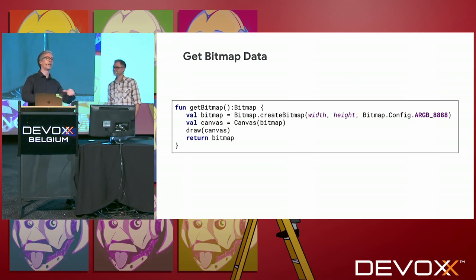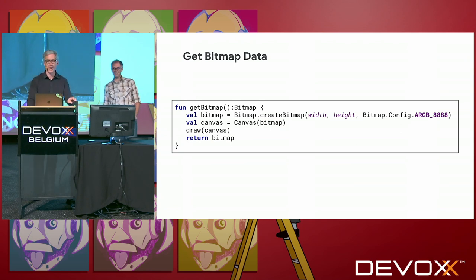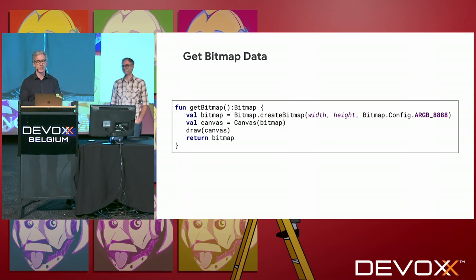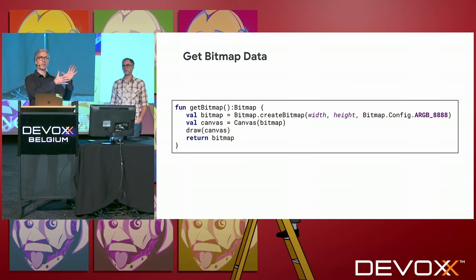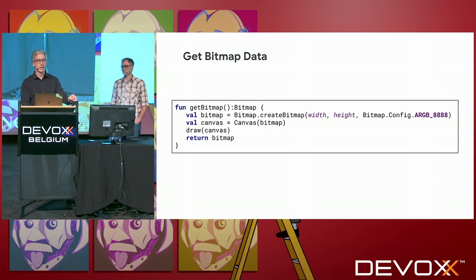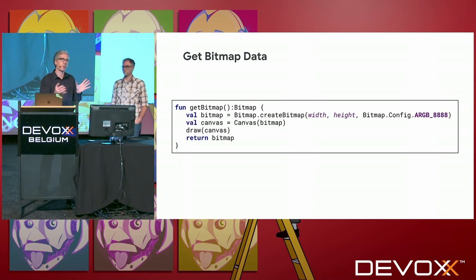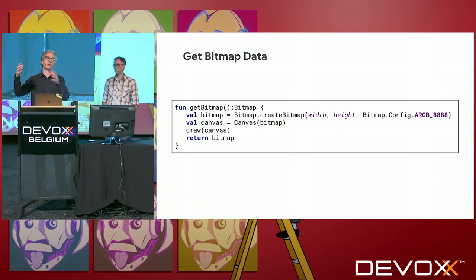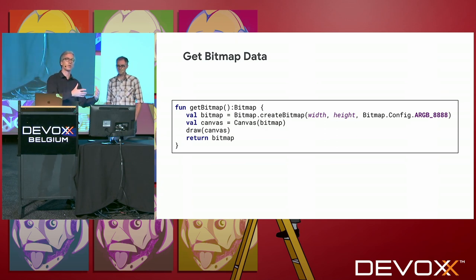Yeah, we go do something else, the UI is responsive, and then eventually we get a callback later. So to get the bitmap data, APIs on Android create a bitmap of the size that we want — maybe the size of the canvas itself or the data model. Then we get a reference to the canvas for that bitmap. This is basically saying I want to be able to draw into this bitmap. Then I'm going to take all that information from my custom view, and instead of drawing it to the screen, I'm just going to draw it to the bitmap. So it's basically a different version of exactly what we're seeing on the screen.